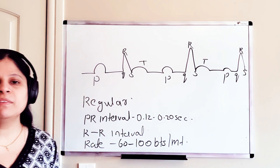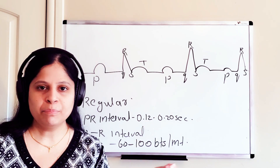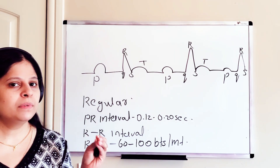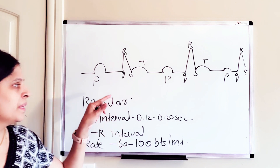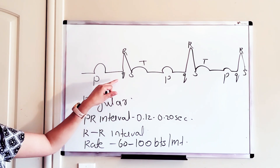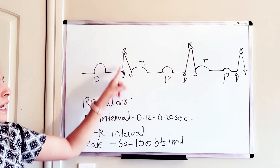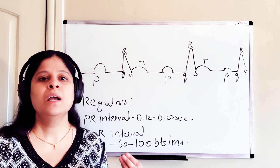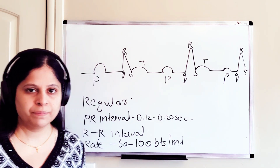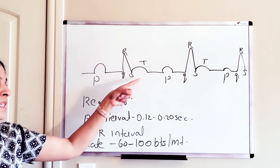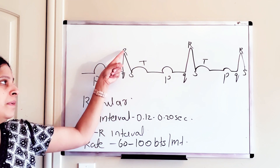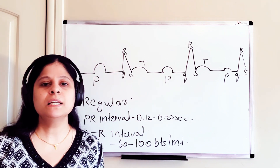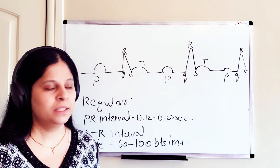What is a P wave? The P wave is atrial depolarization. On a normal ECG rhythm you can definitely see a P wave. What else can you see? You can see a QRS complex, which is ventricular depolarization. And what is the T wave? The QRS complex is followed by a T wave. The T wave is ventricular repolarization.